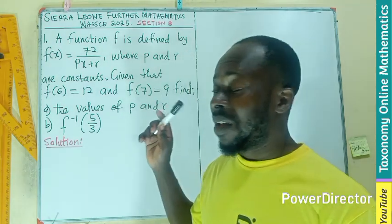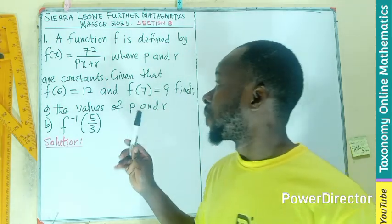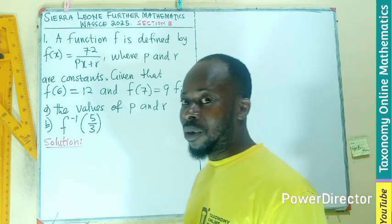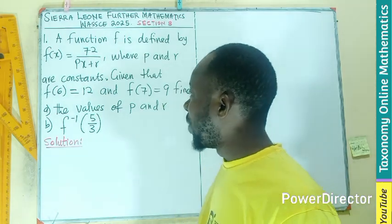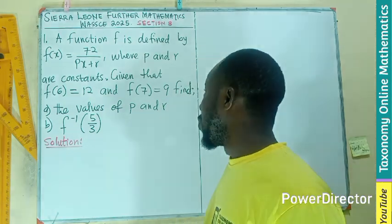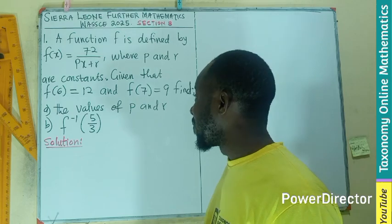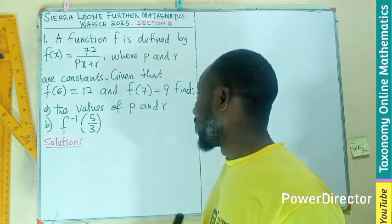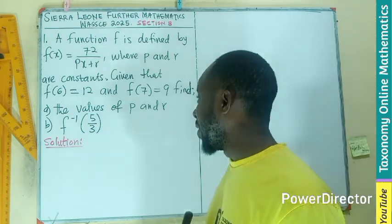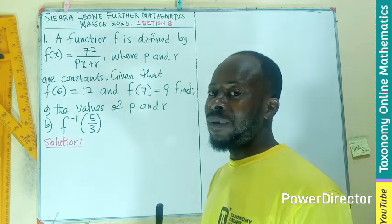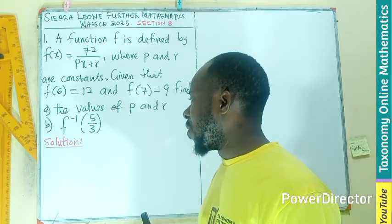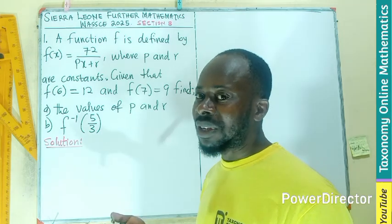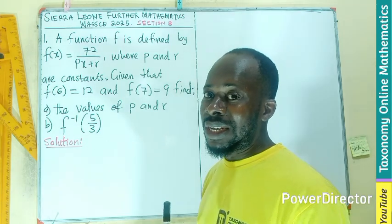This is the first question: the function f is defined by f(x) = 70 / (px + r), where p and r are constants. Given that f(6) = 12 and f(7) = 9, we have to find the values of p and r, and find the image of 5/3 of the inverse of the function.